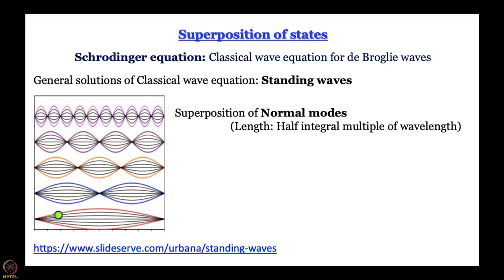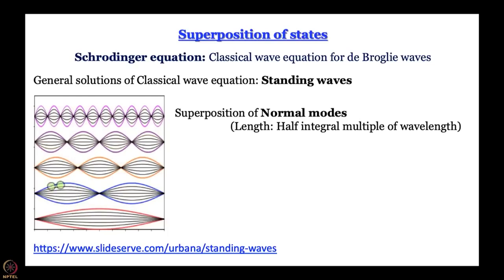If we take the first harmonic and the second harmonic and multiply them point by point: on the left half the products are all positive, on the right half the products are all negative, so when we add them all we get zero. This is the meaning of normal modes and the meaning of ∫ψₘ*(x)ψₙ(x)dx = 0 integrated over all space.